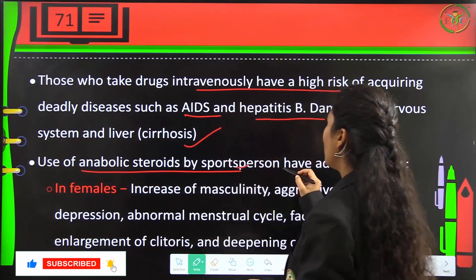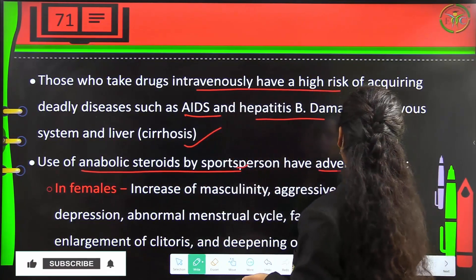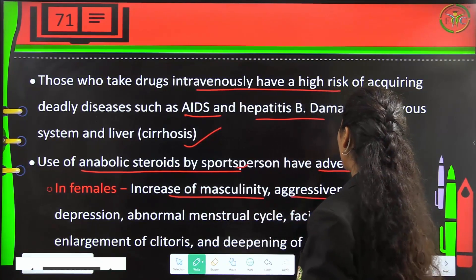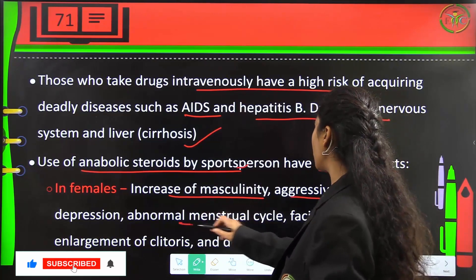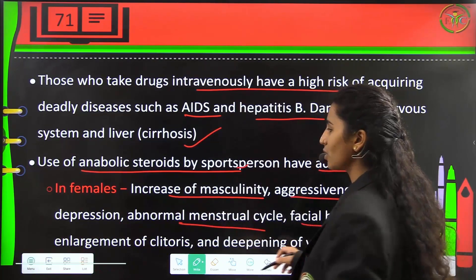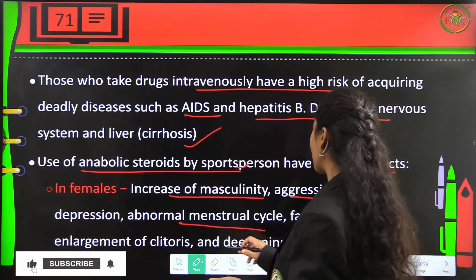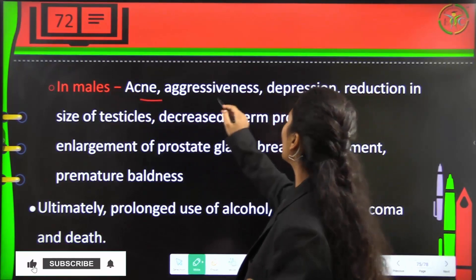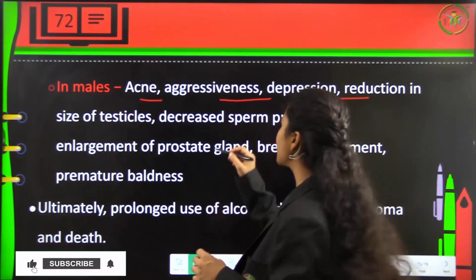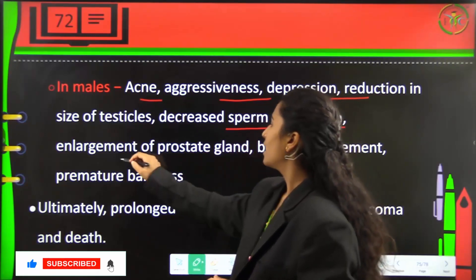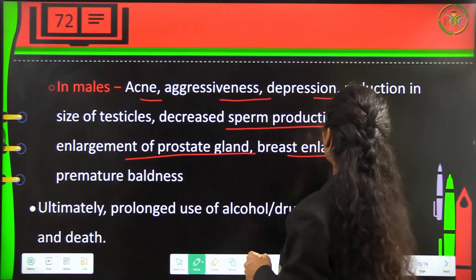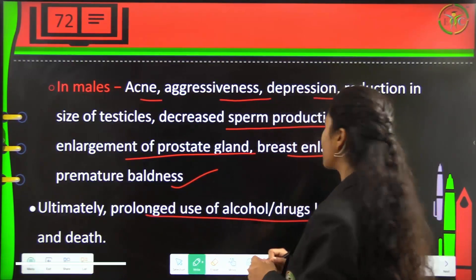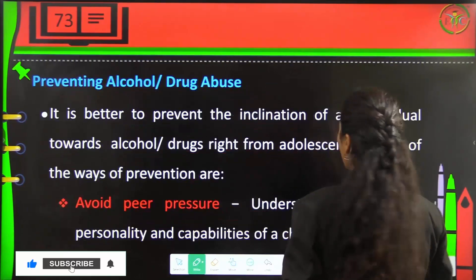Use of anabolic steroids by sports persons has adverse effects. In females it causes increased masculinity, aggressiveness, depression, abnormal menstrual cycles, facial hair growth, enlargement of the clitoris, and deepening of the voice. In males it causes acne, aggressiveness, depression, reduction in size of testicles, decreased sperm production, enlargement of the prostate gland, breast enlargement, and premature baldness. Prolonged use of alcohol or drugs can ultimately lead to coma or death.